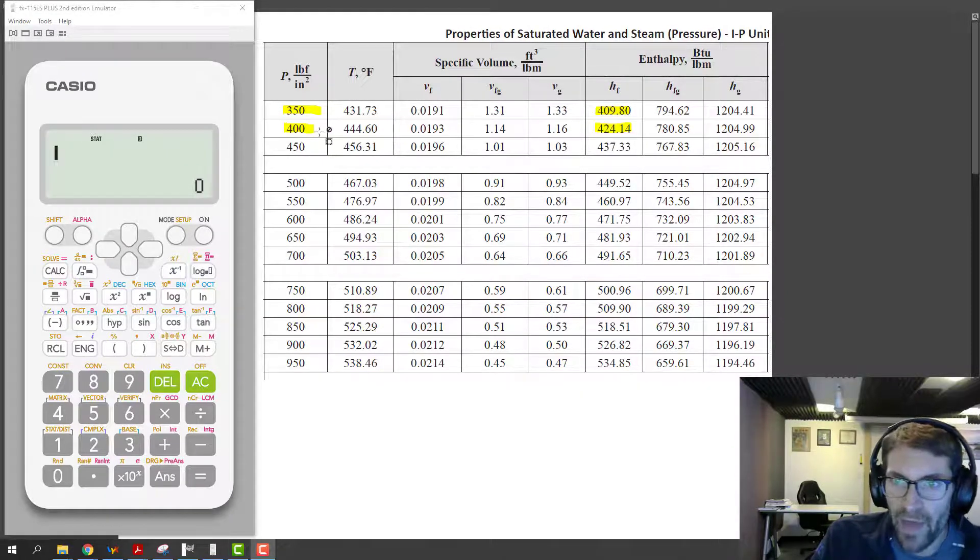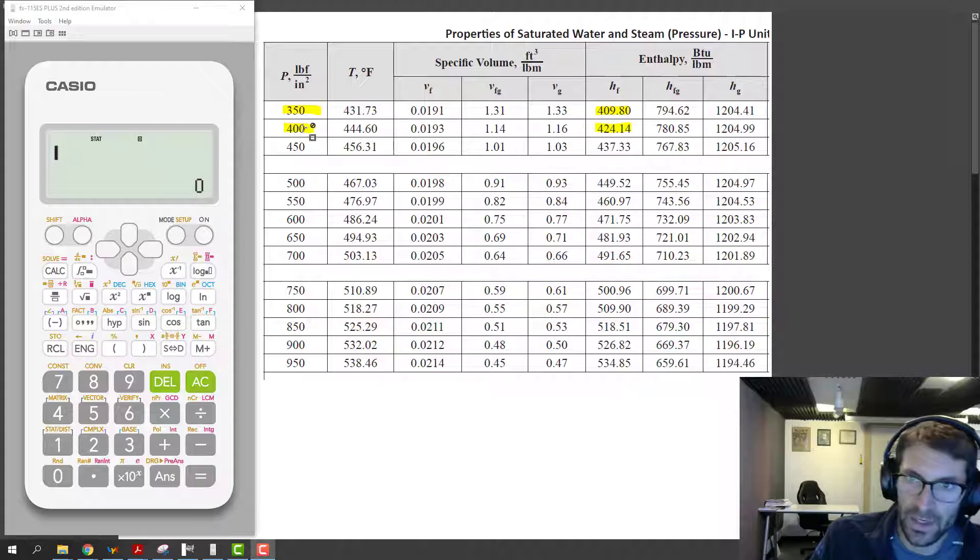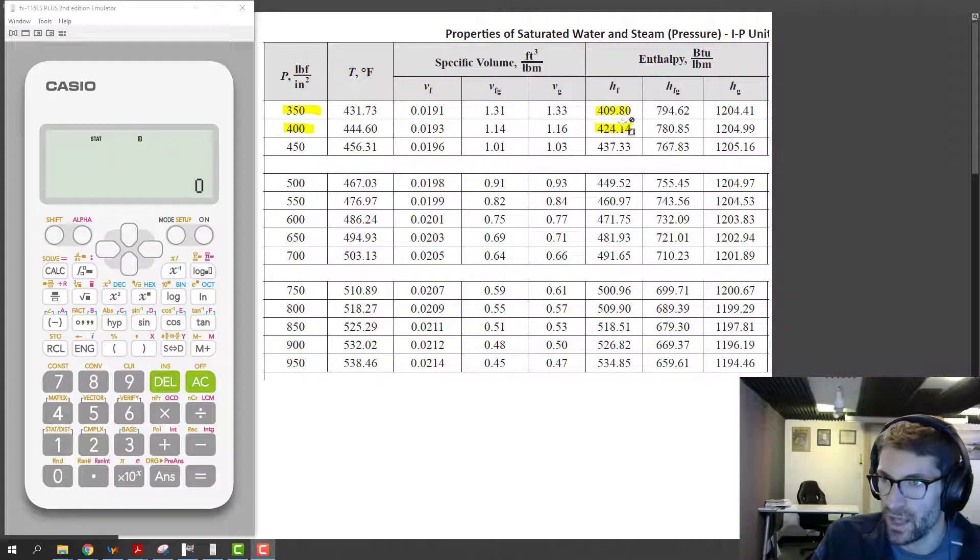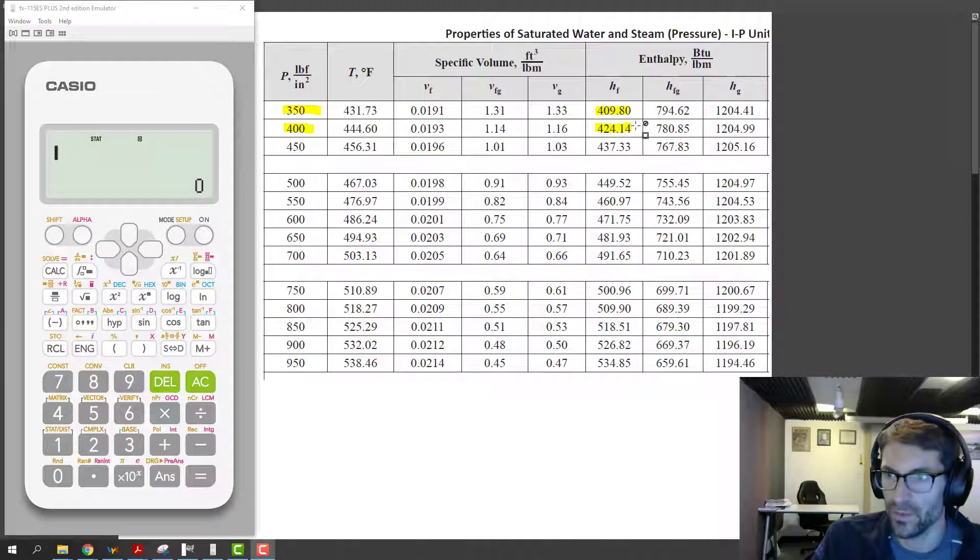We could kind of eyeball that and say it's 40% of the distance, but it's going to get tricky to work out that exact if we're trying to do it with mental math. And if we don't want to make a mistake and we get pretty good at typing this in, it's worth it to just go ahead and set it up in the calculator.